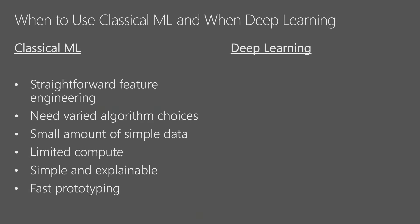Fast prototyping is another aspect of classical machine learning I like. A lot of the packages used are pretty simple to use — easy to set up, install, and understand. They're usually high-level APIs. Finally, when the accuracy on your test data set is acceptable, many companies go with classical machine learning over deep learning and don't need to move to that bigger, more complicated solution.